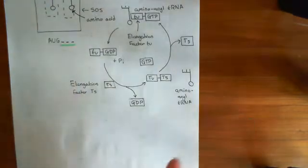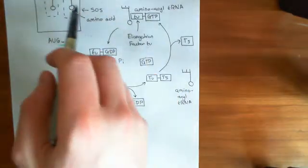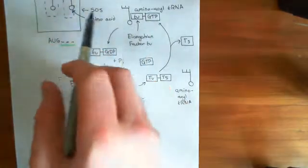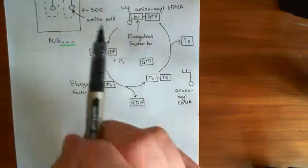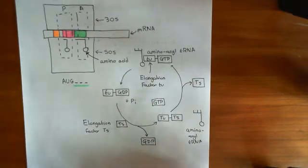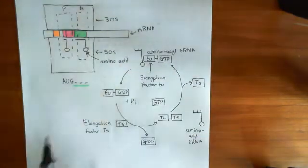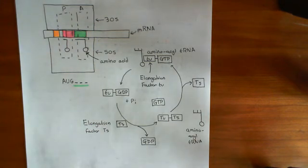That is basically how you regenerate these structures which provide aminoacyl-tRNAs to the A site. An aminoacyl-tRNA on its own cannot get into the A site of the ribosome — it has to enter with elongation factor TU and GTP, which ensures that the incorrect tRNA and therefore the incorrect amino acid is not added. We'll continue this discussion in the next video.